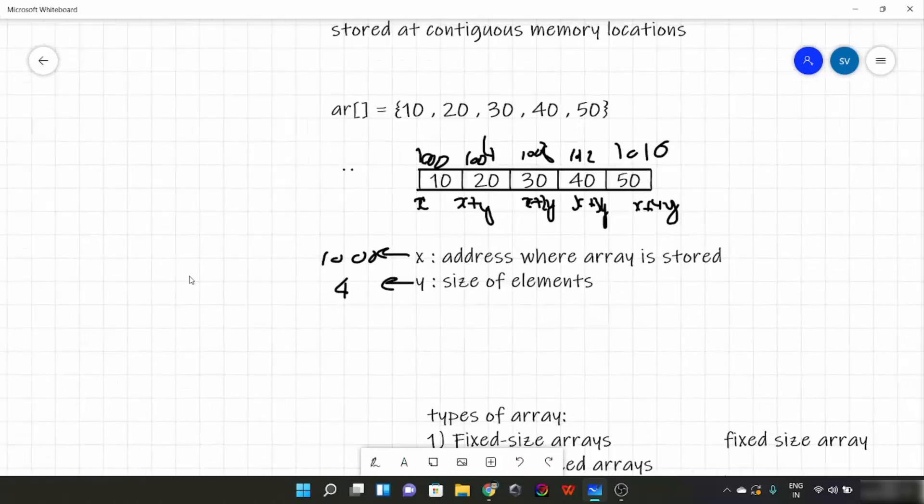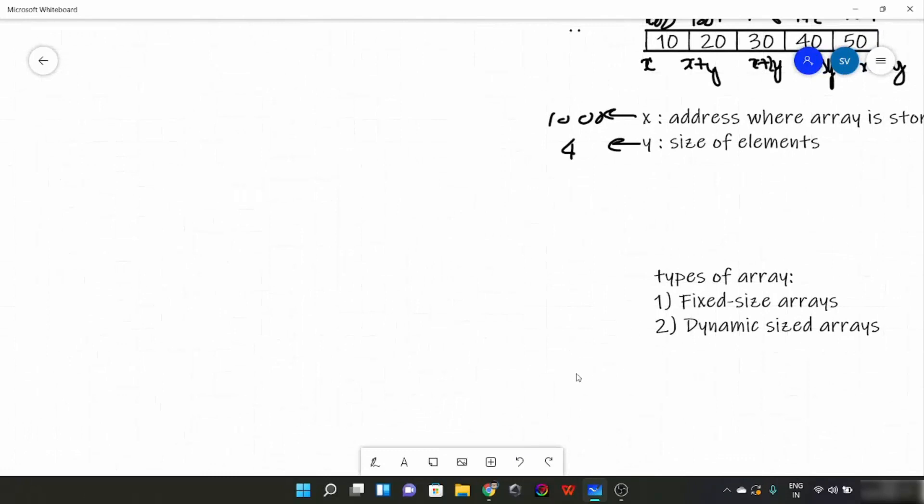Now let's talk about types of arrays. There can be hundreds of ways to differentiate the arrays, but here I choose types of arrays differentiated by size. So there can be two types: one is fixed-size arrays and second is dynamic-sized arrays.